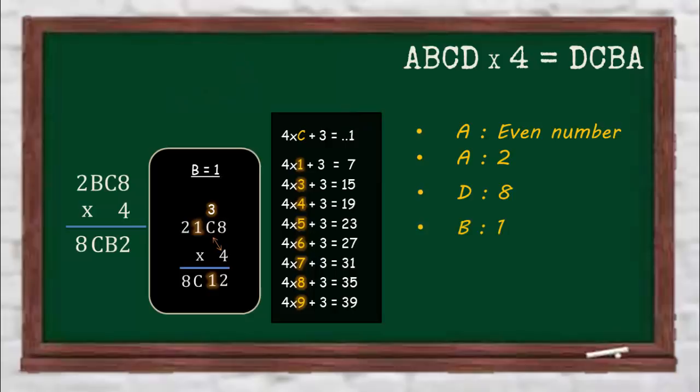And that's why B is equal to 1. Now with B equals 1, apply the same process to get the rightmost digit as 1 for the value of 4 times C plus 3. And only C equals 7 gives the rightmost digit as 1. So the value of C is 7.